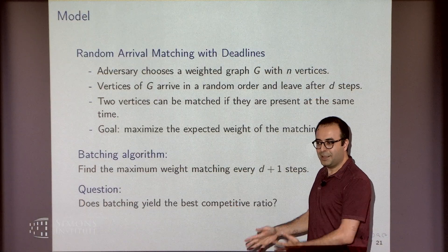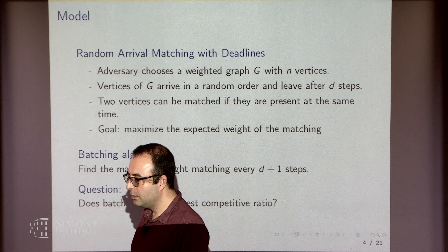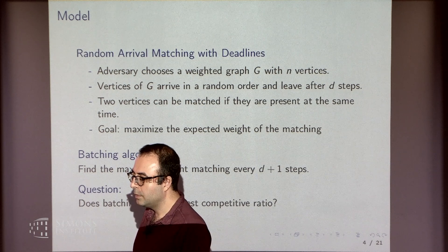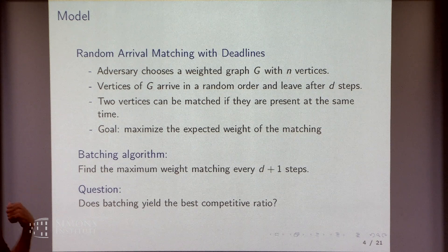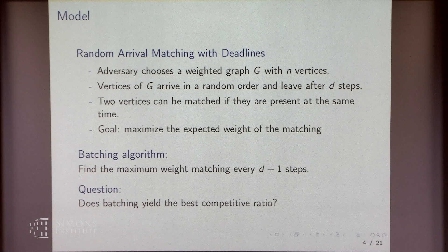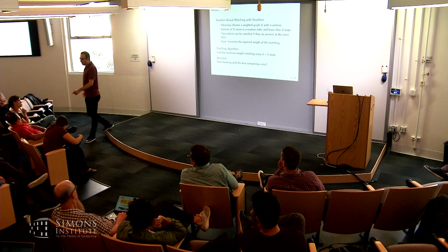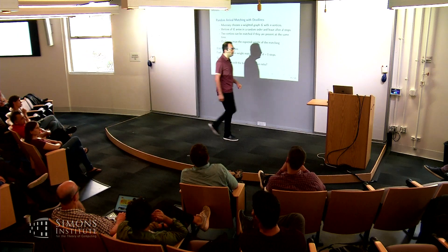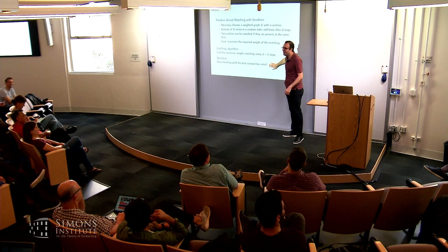The question is whether batching is the best thing you can do. The benchmark is the offline solution with the same constraint — you can't match vertices that are too far apart, but you know the future when you decide. There's the opportunity cost of letting a match pass — there's going to be some expected future benefit for the next arrival. Actually, give me a few minutes and we'll see.